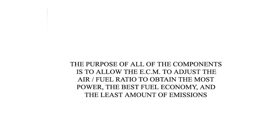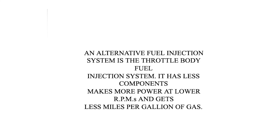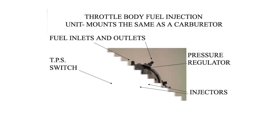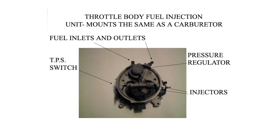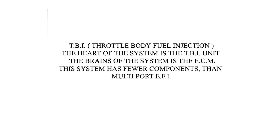The purpose of all of these components is to allow the ECM to adjust the air-fuel ratio to obtain the most power, the best fuel economy, and the least amount of emissions. An alternative fuel injection system is the throttle body fuel injection system, which has fewer components, makes more power at lower RPMs, but gets fewer miles per gallon. The throttle body fuel injection unit mounts the same as a carburetor. The heart of the system is the TBI unit; the brains of the system is the ECM. This system has fewer components than multi-port fuel injection.